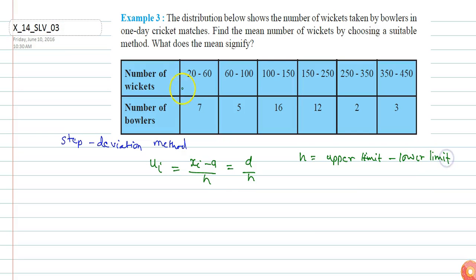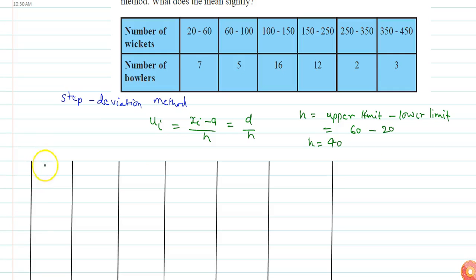In this question the interval is 20 to 60, so h equals 60 minus 20, which equals 40. Here I will write the number of wickets in step form: 20 to 60, 60 to 100, 100 to 150, 150 to 250.